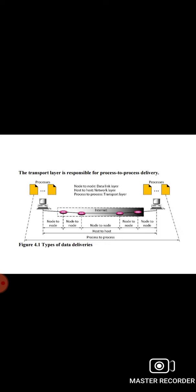Whenever we need to deliver something to one specific destination among many, we need an address. At the data link layer, we need a MAC address to choose one node among several nodes, if the connection is not point-to-point. A frame needs a destination MAC address for delivery and a source address for the next node's reply. At the network layer, we need an IP address to choose one host among millions. A datagram needs a destination IP address for delivery and a source IP address for the destination reply. At the transport layer, we need a port address to choose among multiple processes running on a destination host.